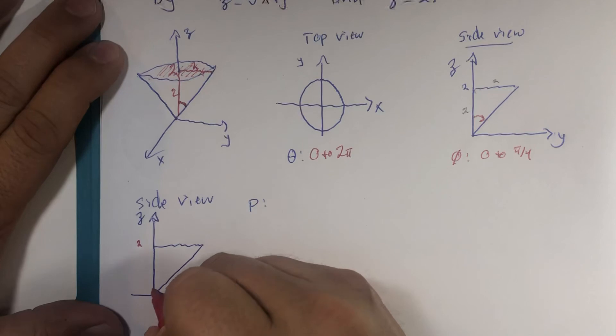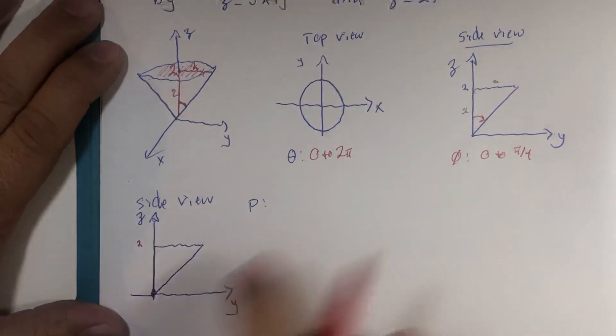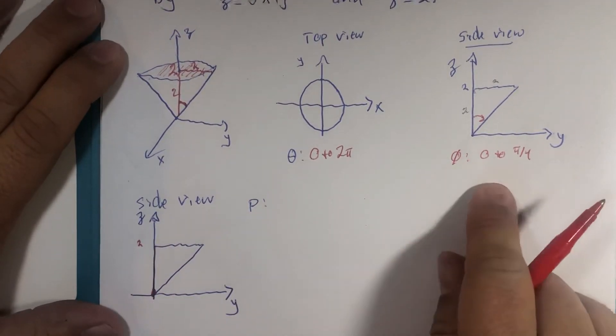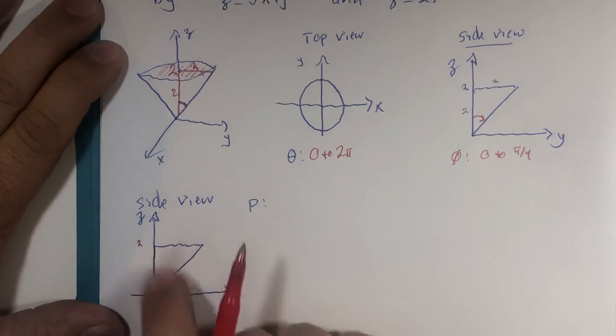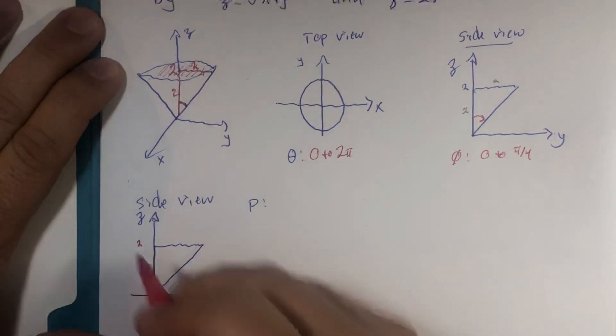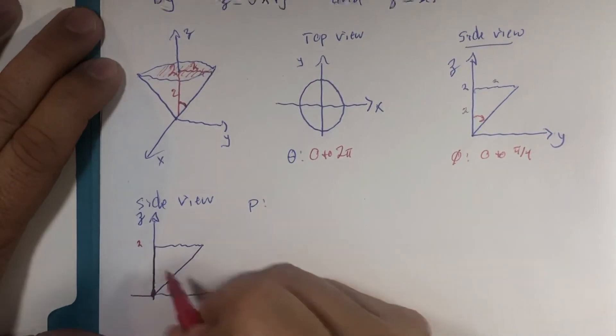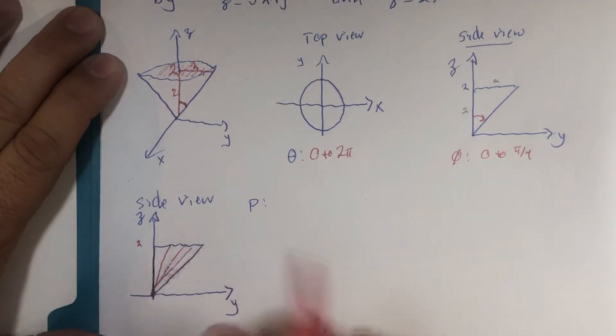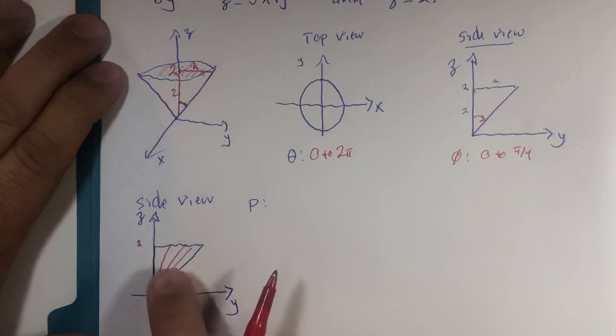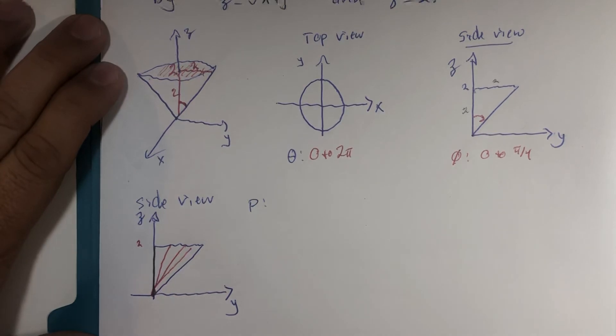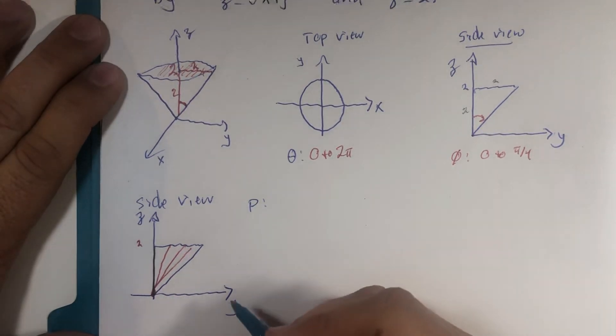And if we're aiming straight up when angle phi is 0, I have here 2 units. But as I go down here, I end up getting farther and farther away from the origin. All right.